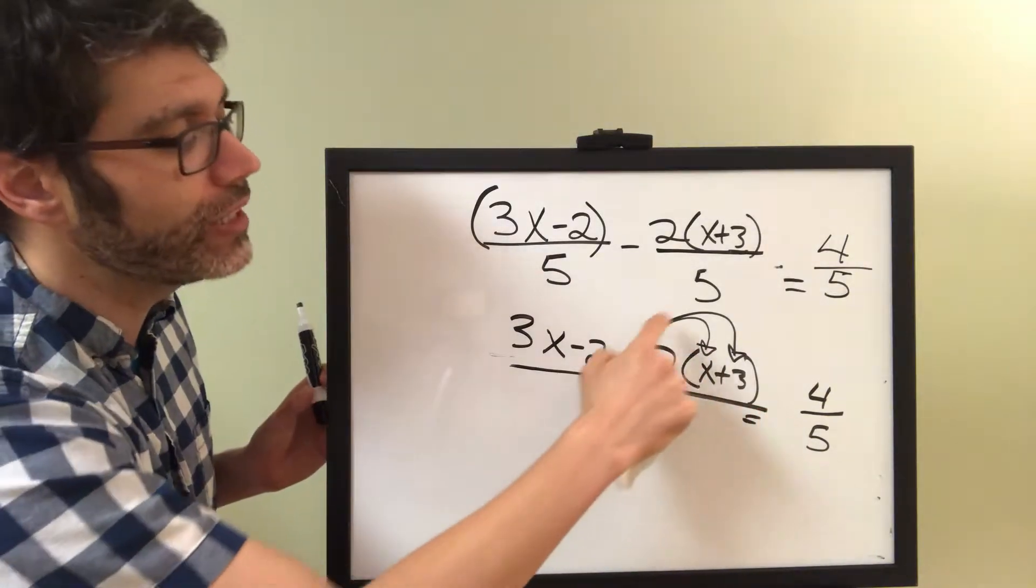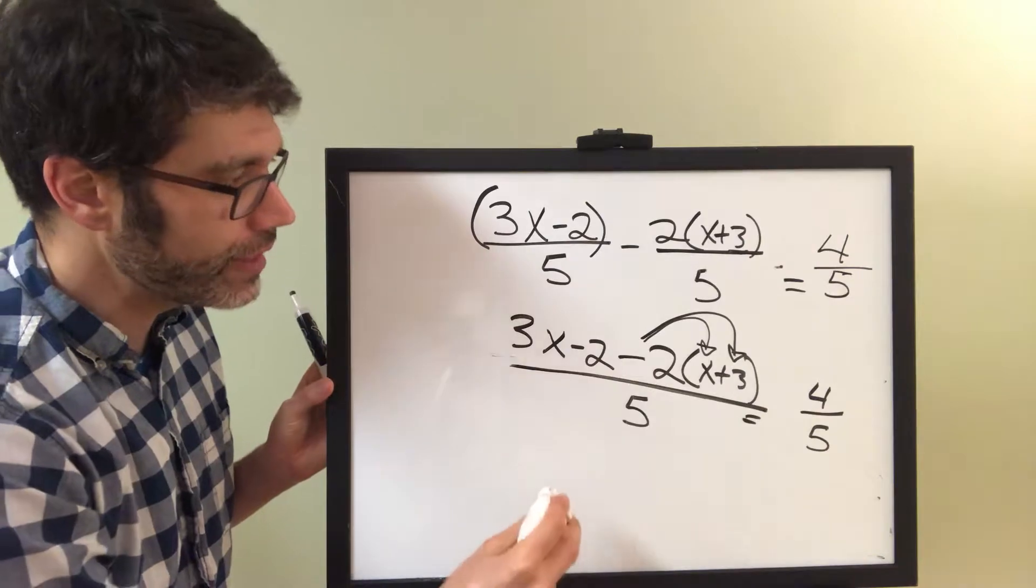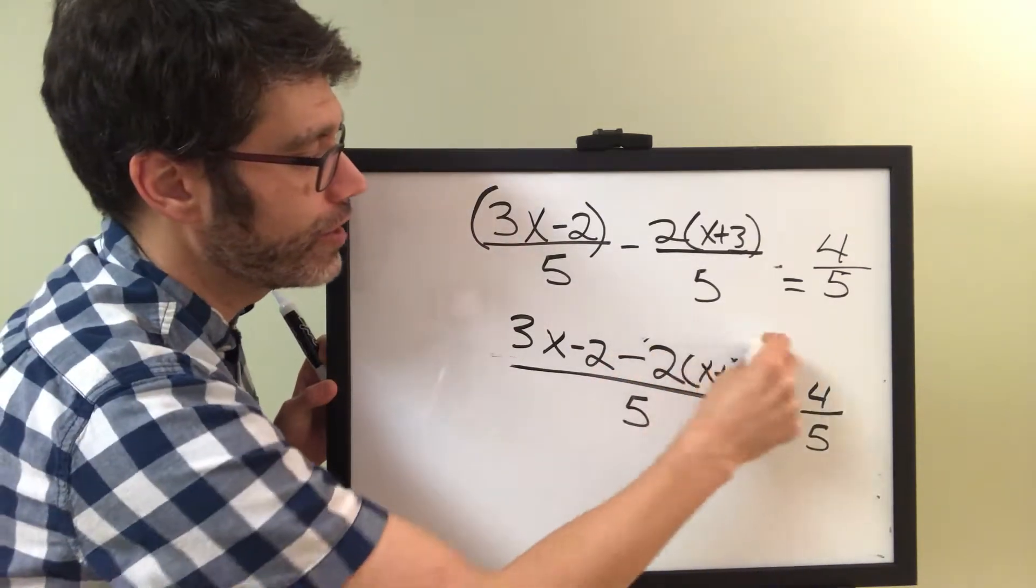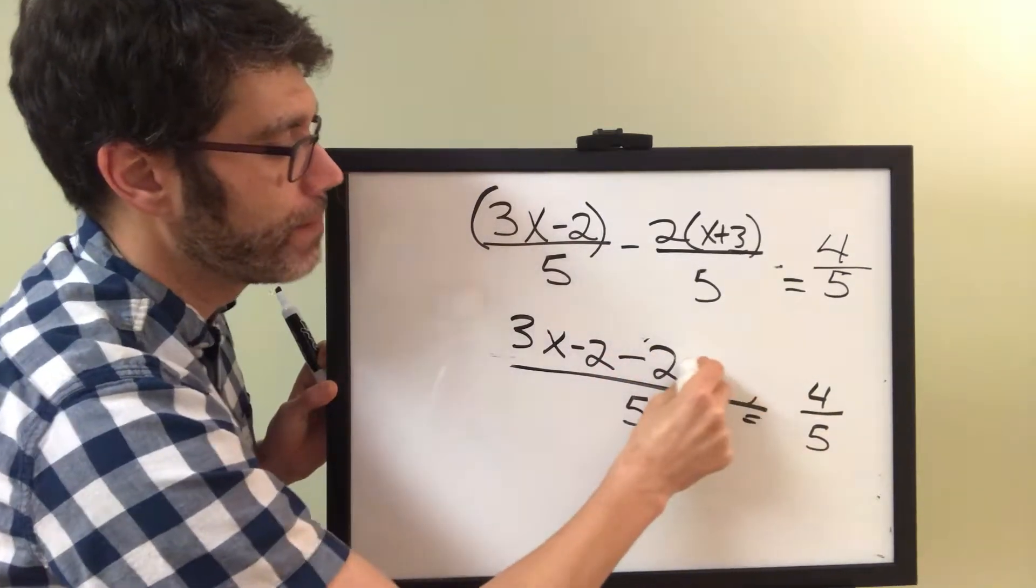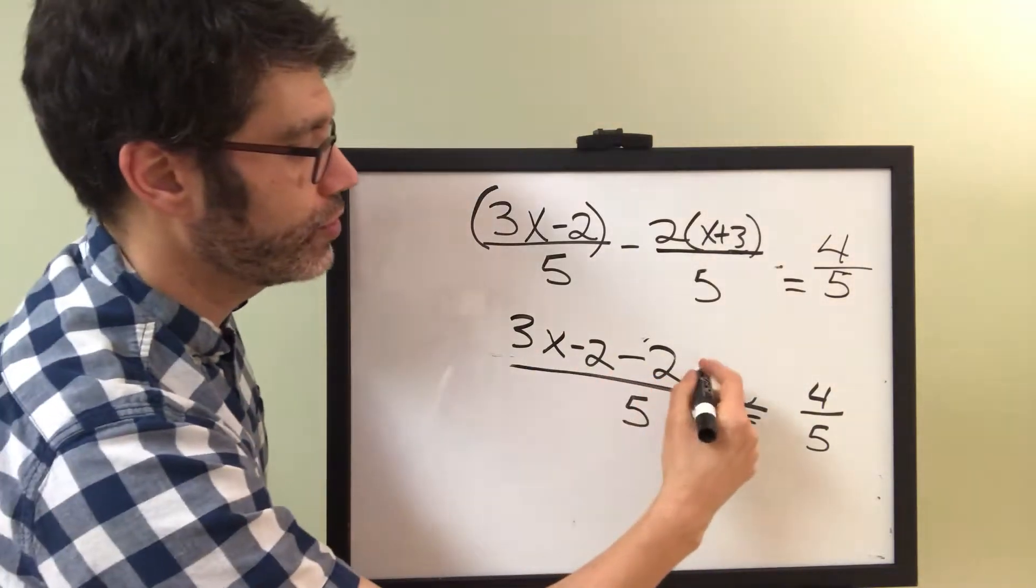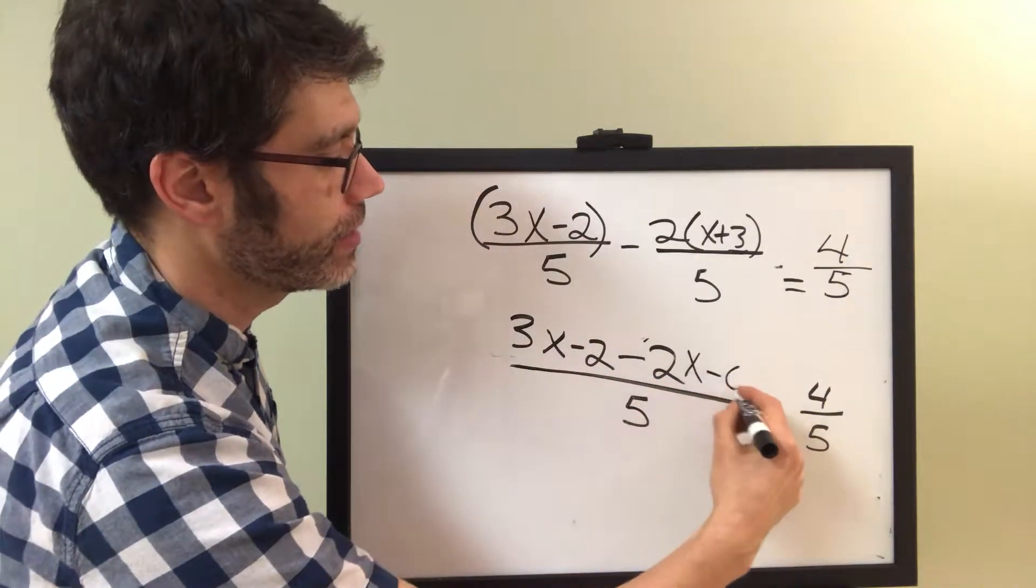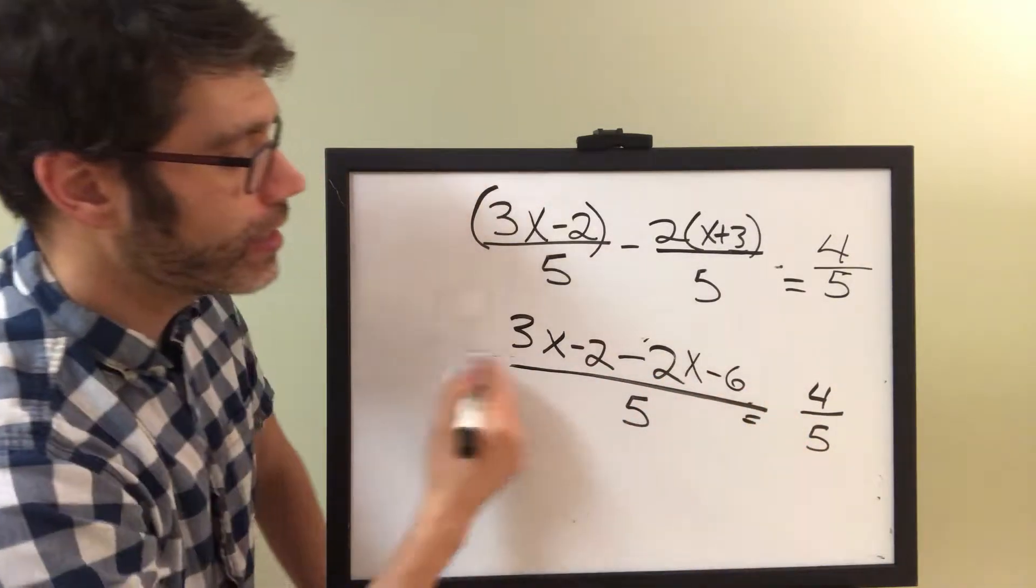So, after we distribute this negative 2, we're going to wind up with a negative 2x minus 6. Negative 2x minus 6. Now we can combine some like terms.